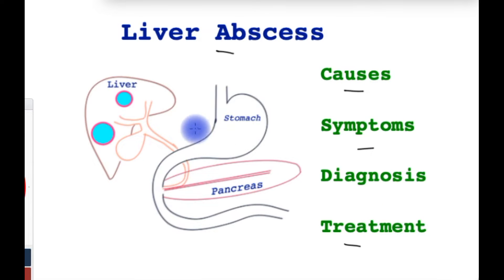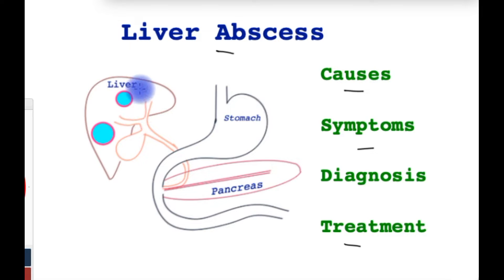In this cartoon you can see the liver at the top right side. An abscess in the liver refers to pus that collects within the liver, as shown by these two spots.